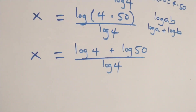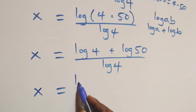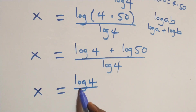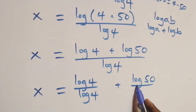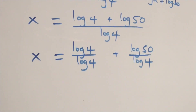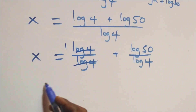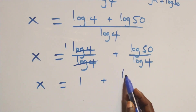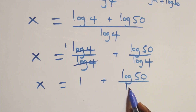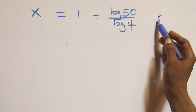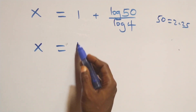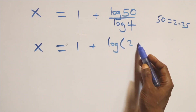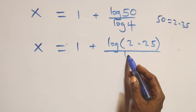So we have x equals log 4 plus log 50, all over log 4. Separating this, log 4 over log 4 cancels to give 1, and we are left with x equals 1 plus log 50 over log 4. We can also write log 50 as log of 2 times 25, giving x equals 1 plus log 2 times 25 over log 4.